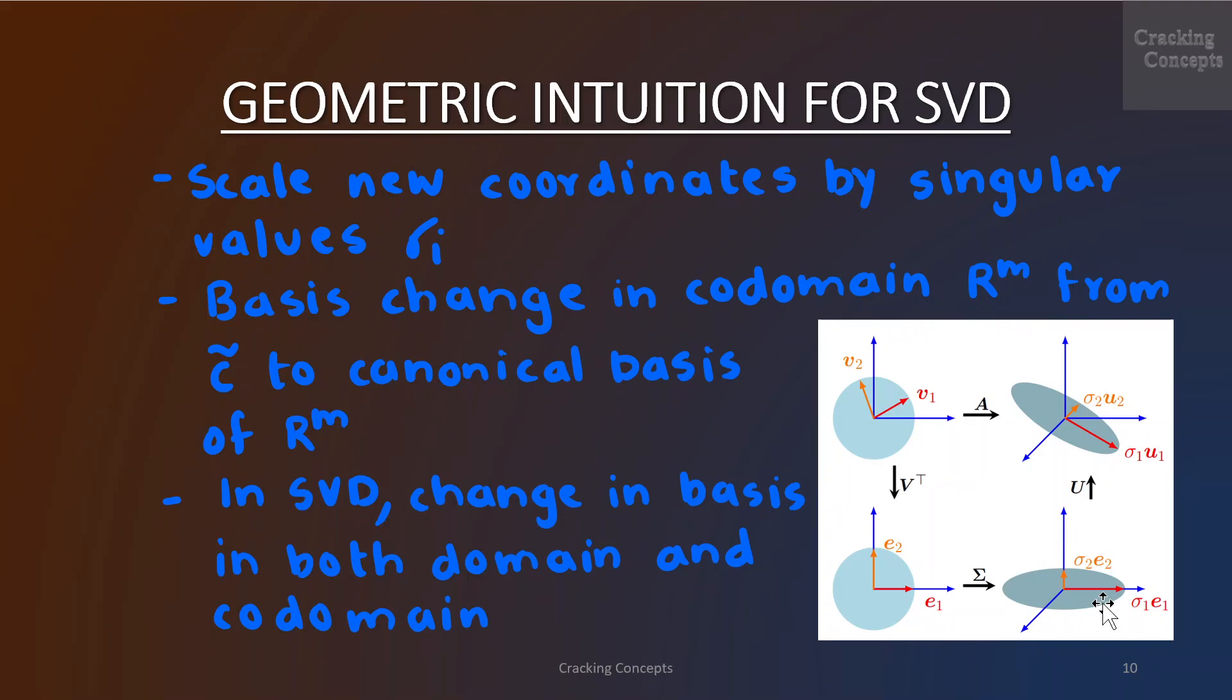U performs a basis change in the codomain R^m from C tilde into the canonical basis of R^m, represented by a rotation of the red and orange vectors out of the e1-e2 plane. This is shown in the top right.